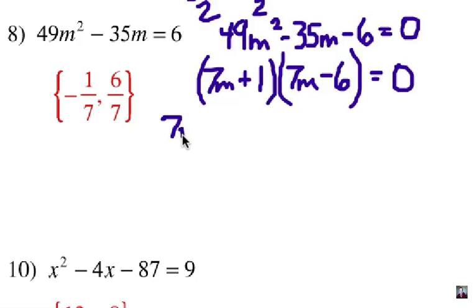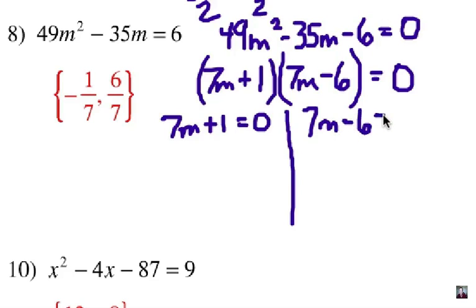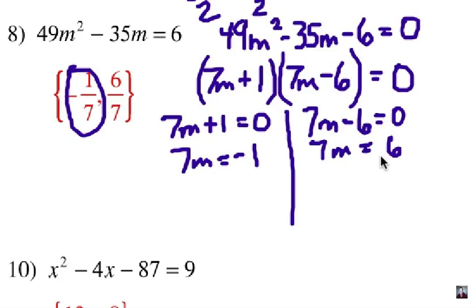Now we're going to set each of those binomials equal to 0. We're going to subtract 1 from each side and add 6 to this side, both sides in that equation. Divide each side by 7, and that will give me my negative 1 7th answer. And divide each answer by 7 here. That will give me my positive 6 7ths there. A little exercise with factoring and this is solving quadratics. Thanks for watching.